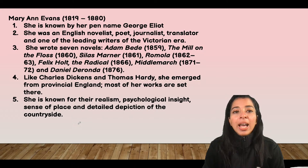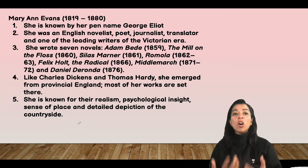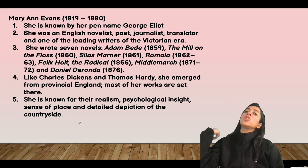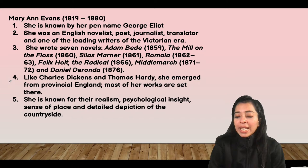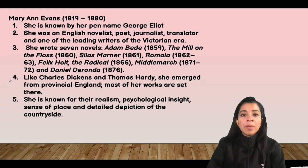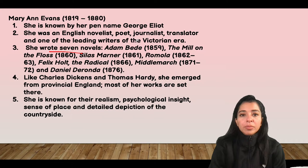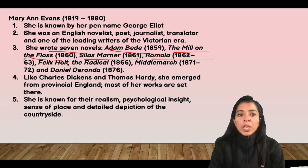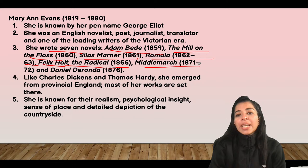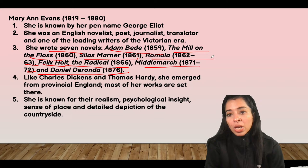George Eliot's real name was Mary Ann Evans. She is known by her pen name George Eliot, and was an English novelist, poet, journalist, and translator. She wrote seven novels — please note their chronology: Adam Bede (1859), The Mill on the Floss (1860), Silas Marner (1861), Romola (1862–63), Felix Holt the Radical (1866), Middlemarch (1871–72), and Daniel Deronda (1876). She emerged from provincial England, and most of her works are set there. She is known for realism, psychological insight, sense of place, and detailed depiction of the countryside.